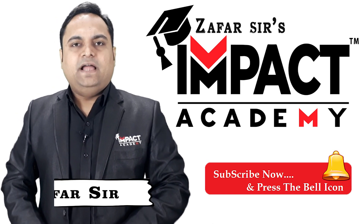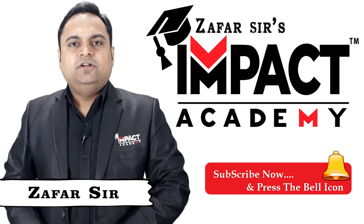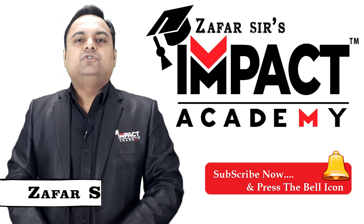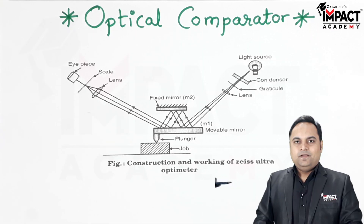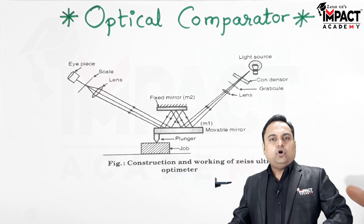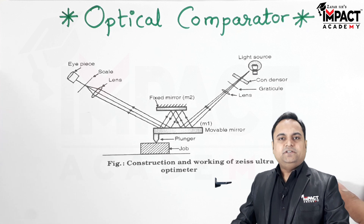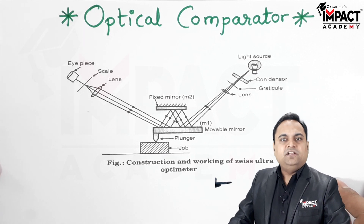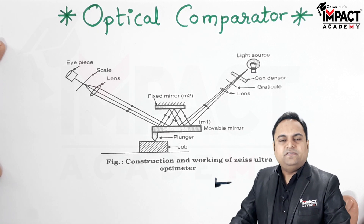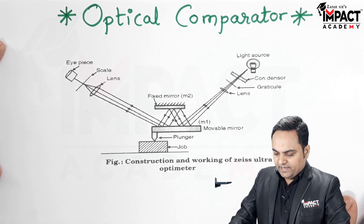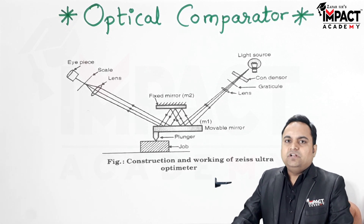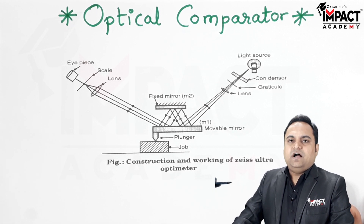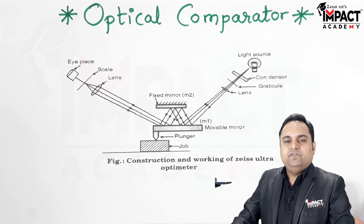In this video I'll be explaining the optical comparator. The basic difference between optical and other types of comparators is that it uses a source of light. At the same time, optical comparators are sensitive, delicate, and costly when compared with mechanical comparators.